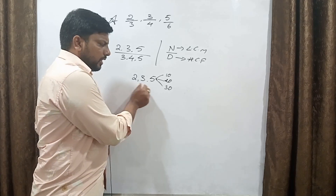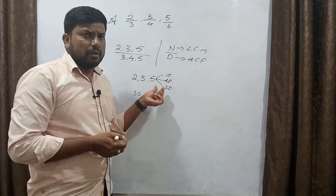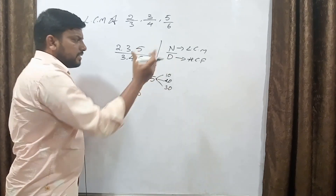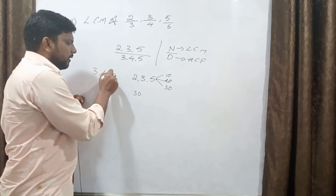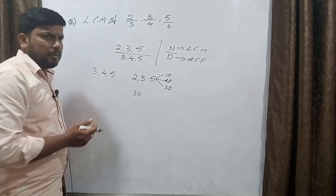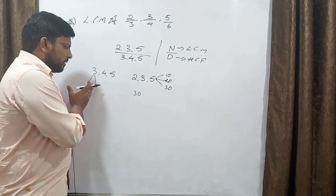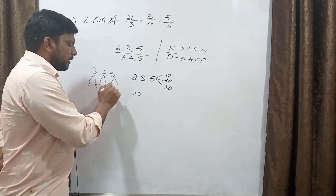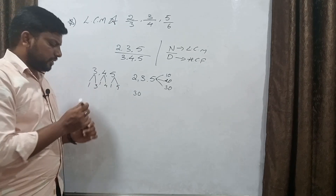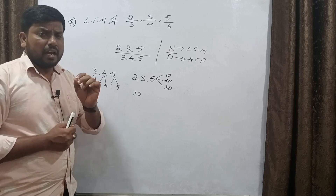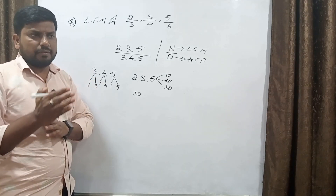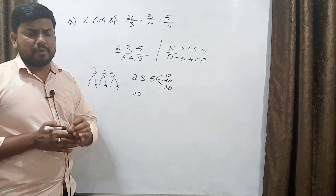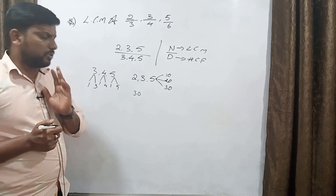The LCM of numerators 2, 3, and 5 is 30. For the denominator, we find the HCF. HCF is the highest common factor. The factors of 3 are 1 and 3; factors of 4 are 1 and 4; factors of 5 are 1 and 5.